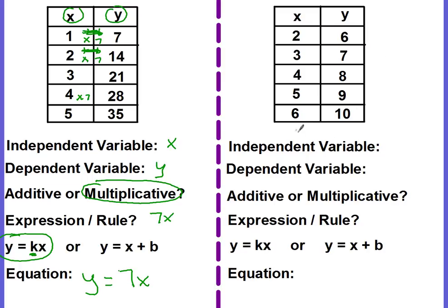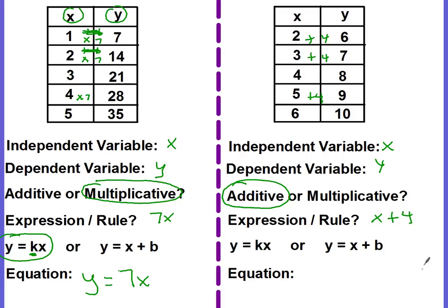Our next example — again x and y are given. Adding 4 to 2 makes 6, adding 4 to 3 makes 7, and adding 4 to 5 makes 9. So it's an additive relationship — the rule is to add 4 to x each time. We use the addition equation: y equals x plus 4.